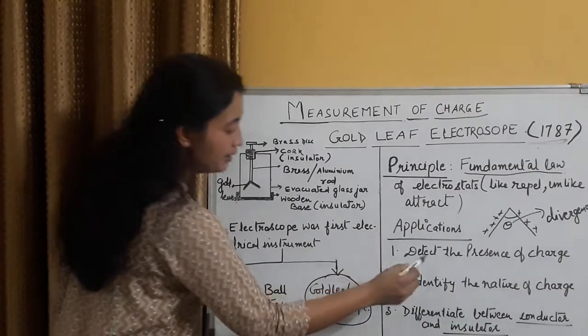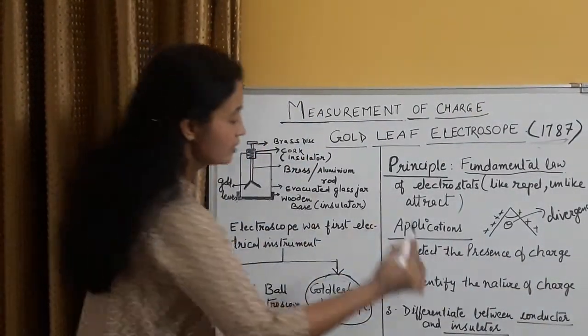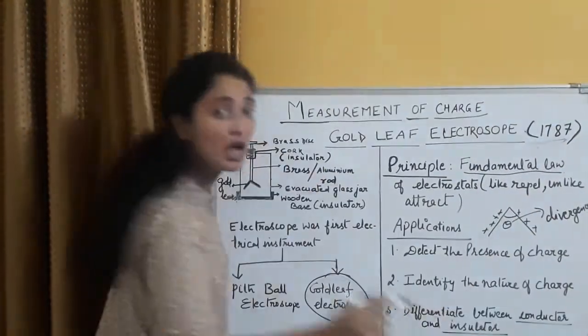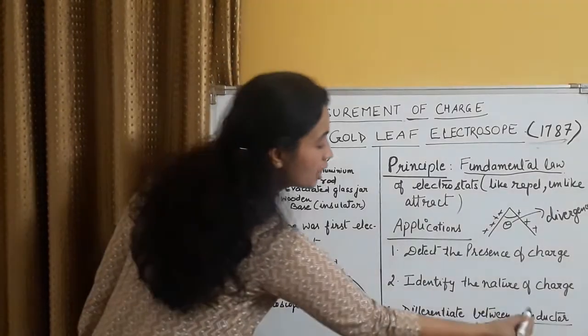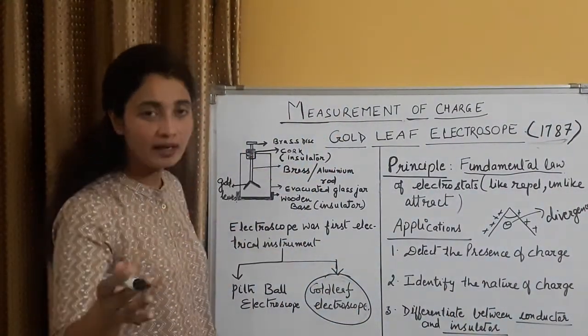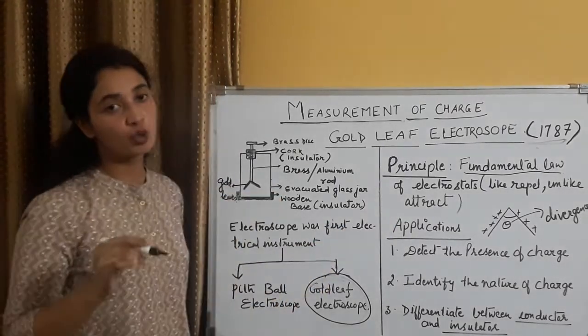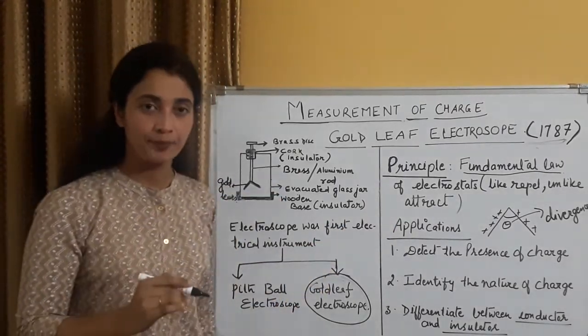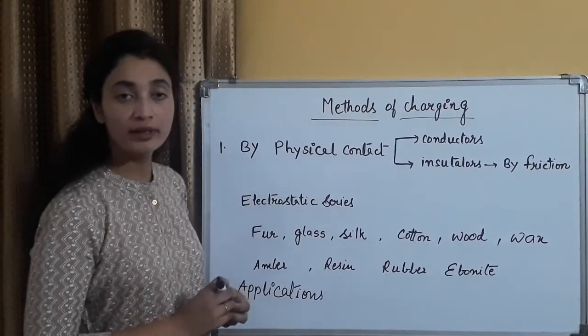So, three applications: detect the presence of charge, charge hai ya nahi hai. Second, identify the nature of charge, whether it is positively charged, ya negatively charged. Third thing, differentiate between conductor and insulator. Ek test rod ko, conductor ya insulator mein, differentiate karne ke liye, hum gold leaf electroscope ko use karte hai.